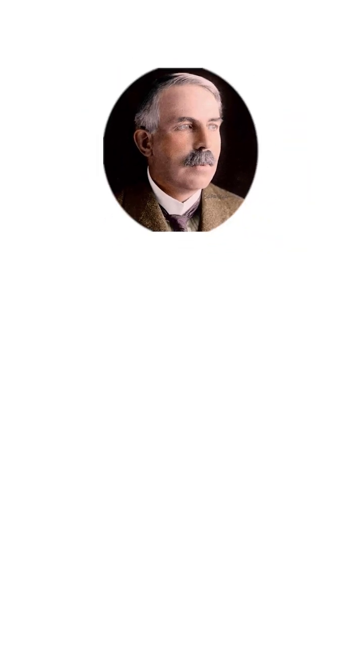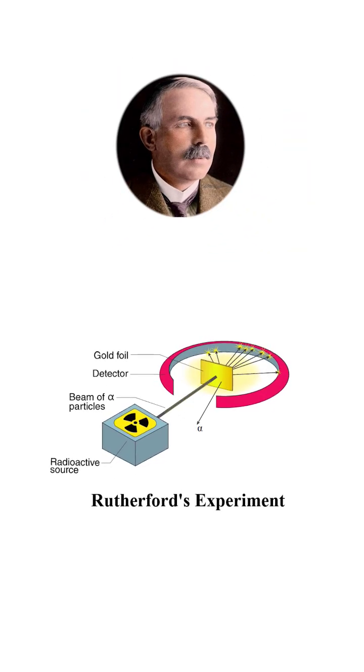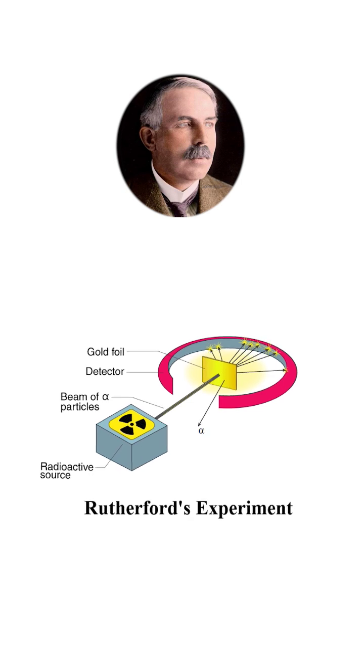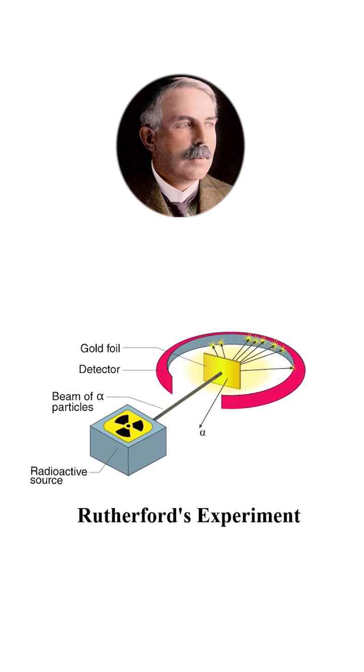When Rutherford performed this very famous experiment, he bombarded alpha particles onto a gold foil and found that the vast majority of these particles penetrated through the foil, but a few of them came backwards.